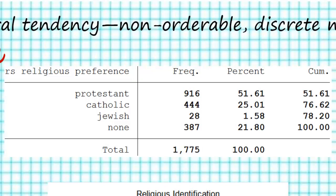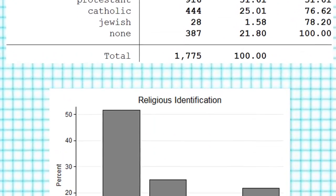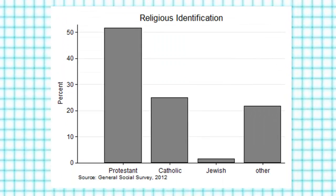Let's look at the graphic at the bottom first. We can simply look at the height of the bars of this bar chart and select the category that has the tallest bar — in this case the Protestants — and conclude that Protestant is our modal category.